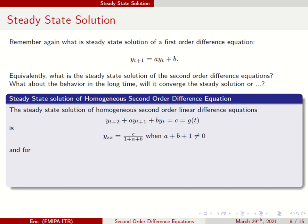This is the steady state solution of homogeneous second order linear difference equations. You have Y_{t+2} + AY_{t+1} + BY_t = C, so by factoring out Y, you get Y_SS = C divided by (1 + A + B), when A + B + 1 is not equal to zero.